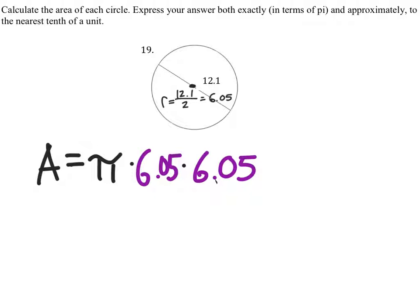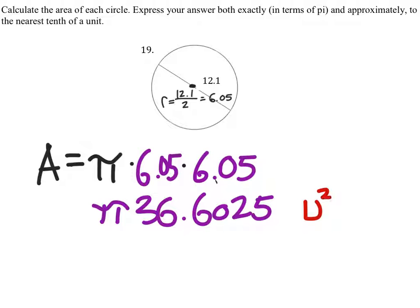And when we multiply these together, we get 36.6025. And if we multiply this by pi, we get our answer in units squared.